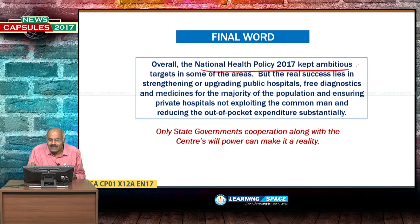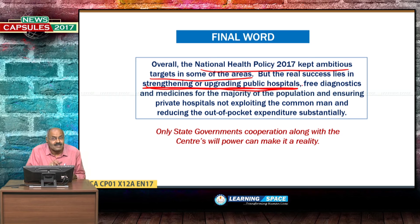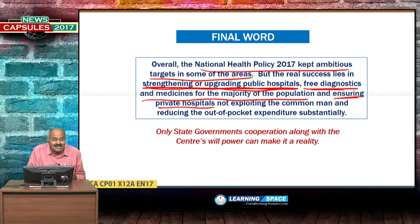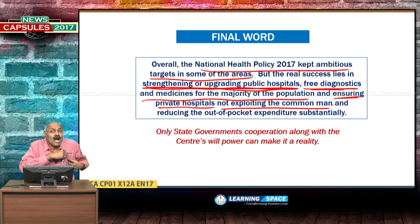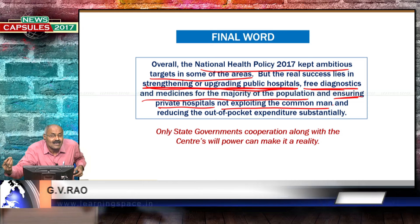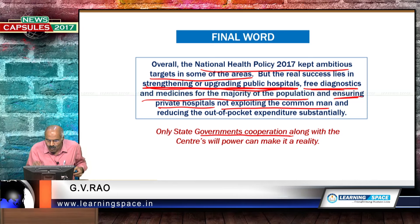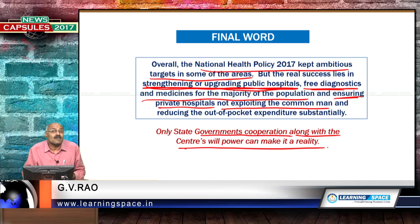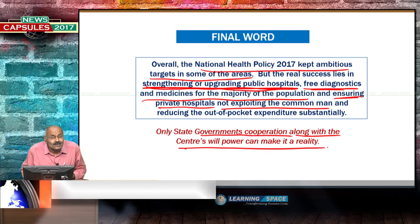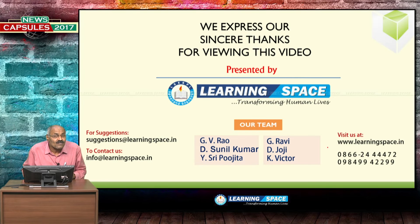Overall, the National Health Policy has kept ambitious targets. But real success lies in upgrading public hospitals, providing free diagnostics and medicines to the majority, ensuring private hospitals do not exploit the common man, and substantially reducing out-of-pocket expenditure. Only state government cooperation along with the centre's willpower can make it a reality. With this, let us conclude the first capsule of the week. Have a nice day.